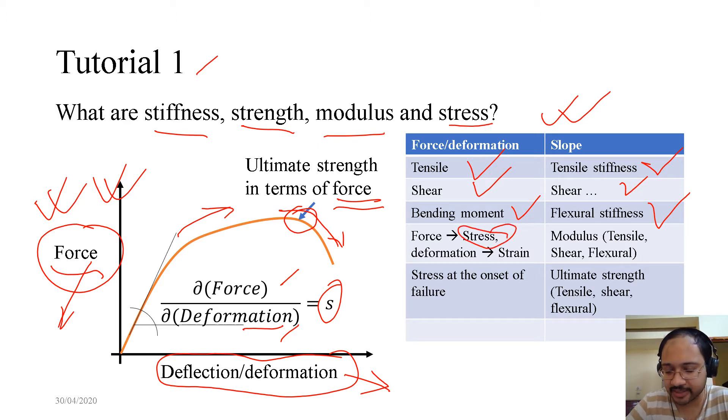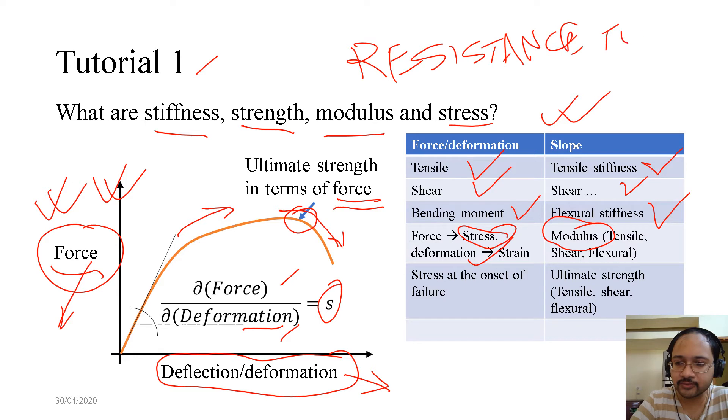Now, if force is replaced with stress, if it's initial force divided by initial cross-sectional area, that gives you the engineering stress. If it's divided by the instantaneous cross-sectional area, that gives you the true stress. Similarly, if deformation is replaced by strain, then only you get the term modulus. Now, modulus has a physical significance. What is the physical significance of modulus? It is the resistance to deformation.